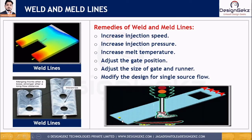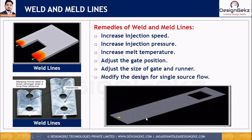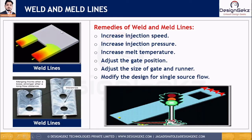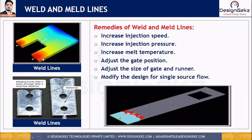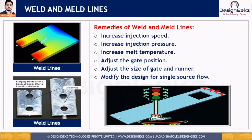By modifying the design for single source flow, we can mitigate this defect. For example, instead of putting two gates, we can use one gate so that molten plastic fills from a single source. By that approach, we can mitigate the weld and melt line defect.